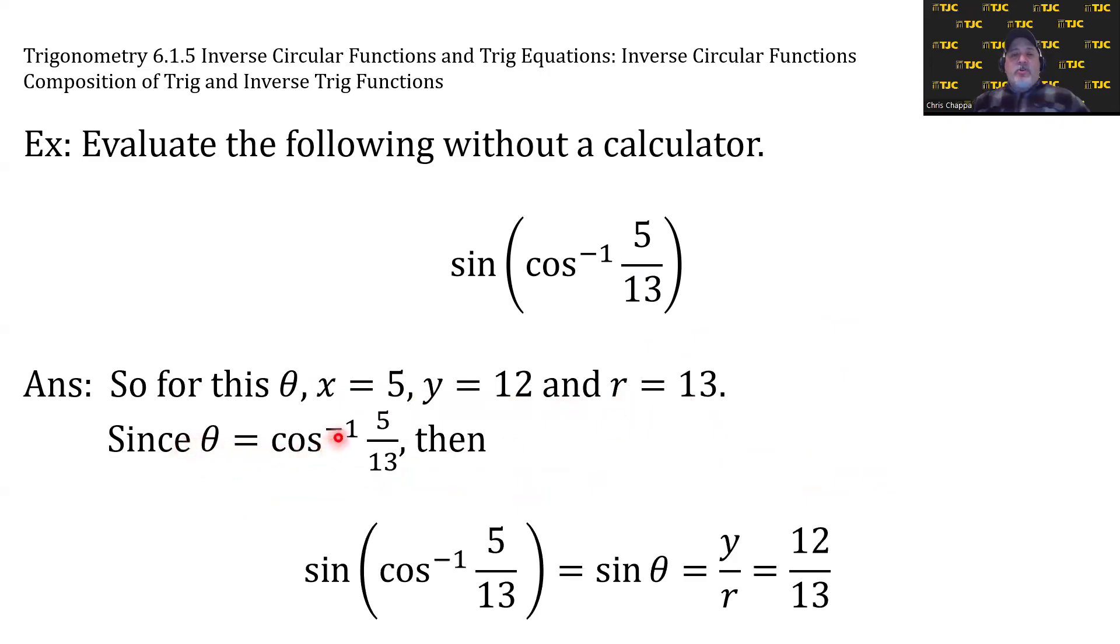And since theta equals cosine inverse of 5 thirteenths, then sine of cosine inverse of 5 thirteenths is the same as sine of theta. Definition of sine is y over r. Y is 12, r is 13. I know that went kind of quickly, but the truth is all we did was dissect the information we were given using what we know to get the answer that we wanted.